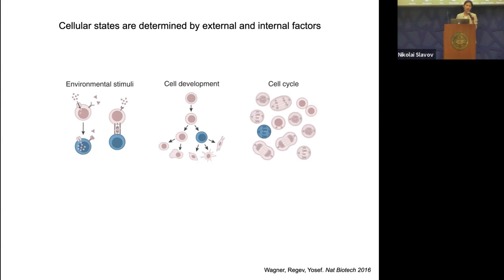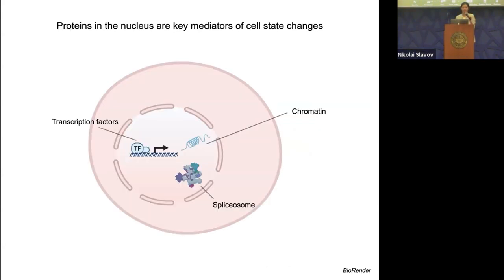We were interested in how cells respond to environmental signals and how cellular activities remodel cell states. Cell states mean a variety of different things, such as how they respond to environmental stimuli, or something as recurrent as cell cycle. Many of these cell state changes are mediated by proteins that reside in the nucleus — from a transcriptional perspective, there are regulatory proteins such as transcription factors, chromatin structures, and spliceosomes that shape gene expression profiles presented by each cell.